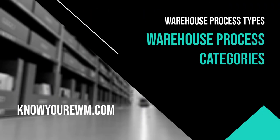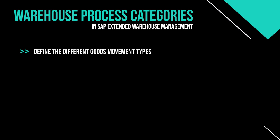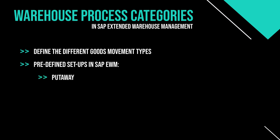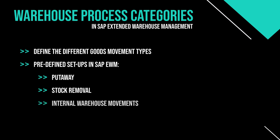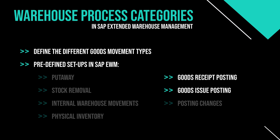Warehouse process categories. The warehouse process categories define the different goods movement types in SAP EWM. The following ones come as a predefined setup: put away, stock removal, internal warehouse movements, physical inventory, goods receipt posting, goods issue posting, and posting changes. The warehouse process categories for goods receipt and goods issue postings are used SAP-internally for posting a goods receipt and a goods issue.